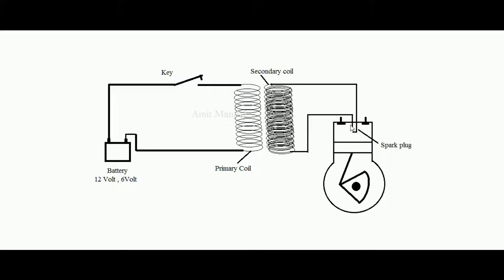I am particularly talking about how a spark is developed between the electrodes of the spark plug. The spark plug contains two terminals — an electrode at each terminal — and between these two terminals the spark is developed. So particularly, how is the spark developed on time?